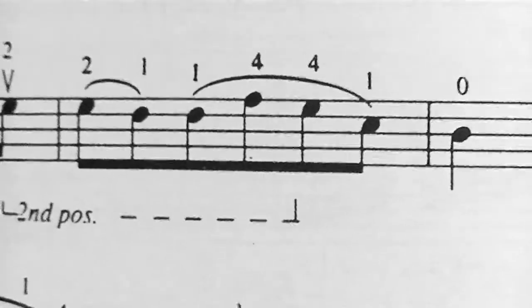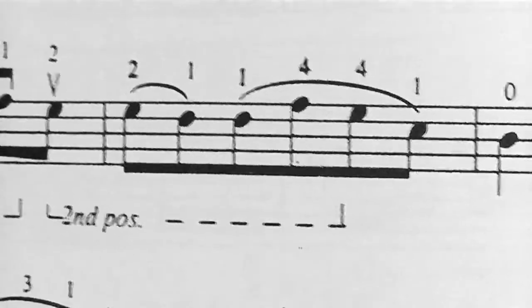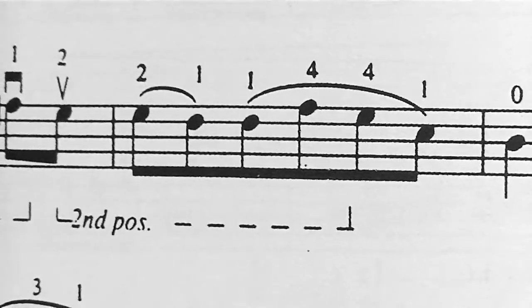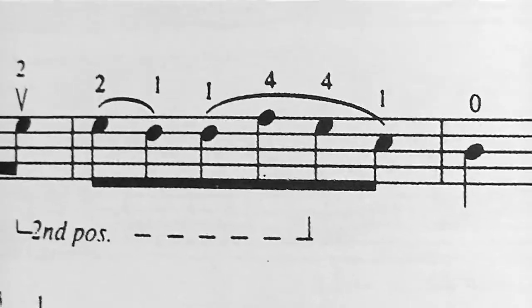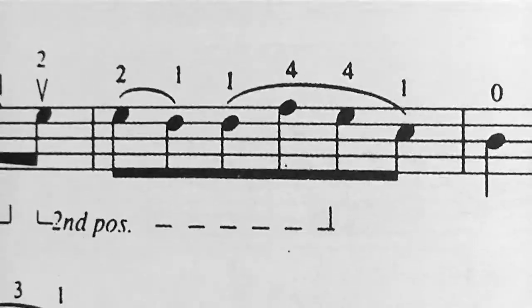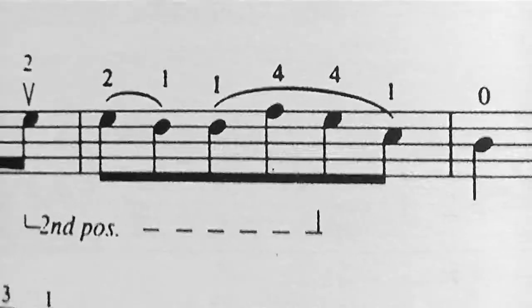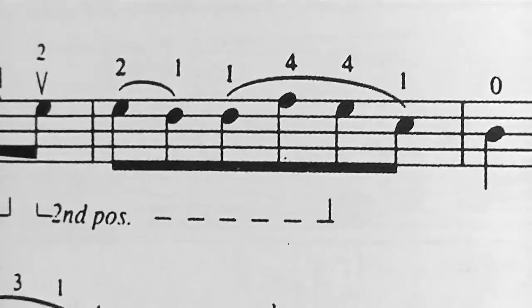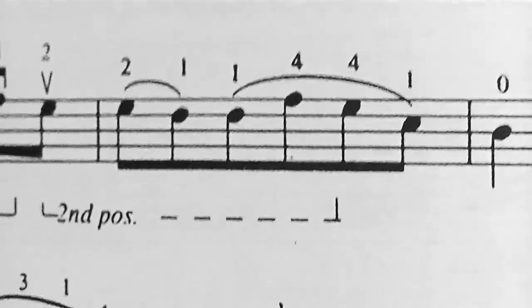This is two pages away in the exact same book. In this case, the method is calling this position that the cellist needs to use second position also. But you'll notice in the measure that's at the center of the video right now, that is also a G natural, but here we're using our second finger instead of our third finger, as we saw in the previous scene. So clearly these are not the exact same position, even though they're called the same.